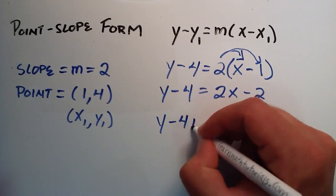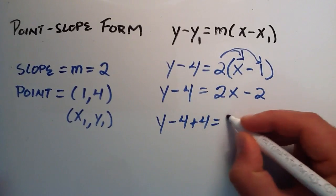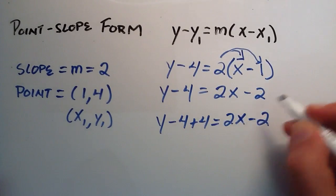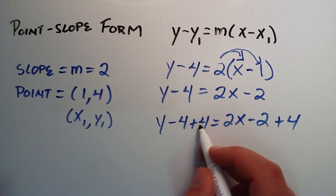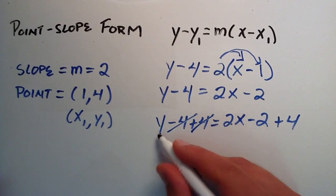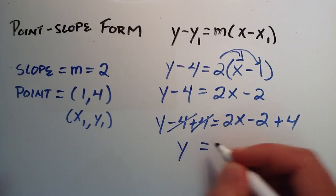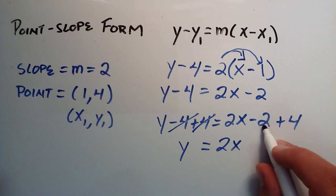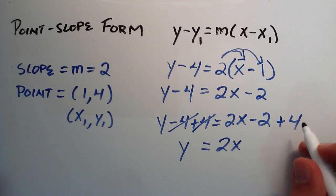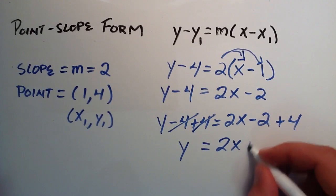So minus 4 plus 4, and 2x minus 2, and then we add 4 to that side as well. So minus 4 and positive 4 cancel, giving us 0. So this becomes y equals 2x, and then we have minus 2 and plus 4. Positive 4 take away 2 gives us plus 2.